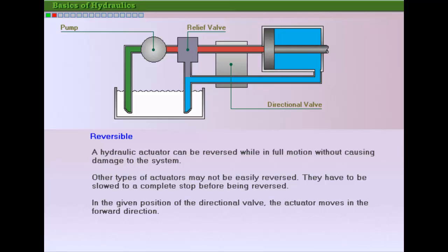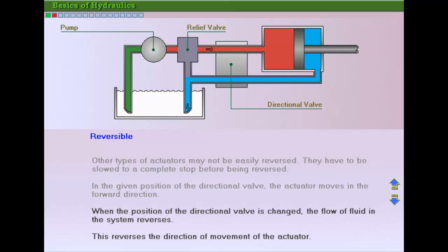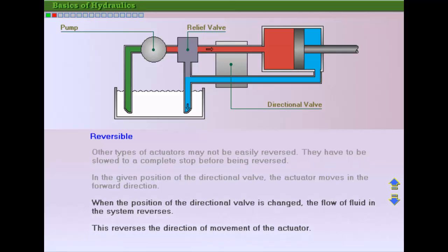In the given example, for the given position, the actuator moves forward. When the position of the directional valve is changed, the flow of the fluid in the system reverses. This results in the direction of the actuator being reversed.